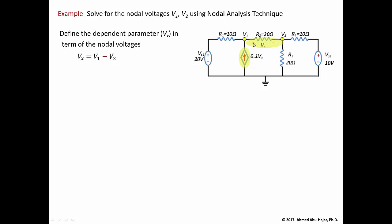The voltage across the 20-ohm resistor, as defined in terms of Vx, is going to be the voltage at this node minus the voltage at that node. By KVL, if you say minus V1 plus Vx minus V2, solving for Vx you get V1 minus V2. So we can define the voltage across this resistor in terms of nodal voltages. It doesn't have to be a voltage — it can be a current. If the dependent parameter were Ix, the current through a resistor, you'd still define it as a node voltage difference divided by that resistance. In any case, you always need to define the parameter in terms of the nodal voltages. Here we have Vx equals V1 minus V2.